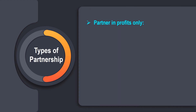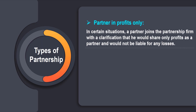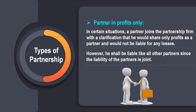Next is partners in profits only. In certain situations, a partner joins the partnership firm with a clarification that he would share only the profits and would not be liable for any losses. However, he shall be liable like all other partners, since the liability of all the partners is a joint liability.